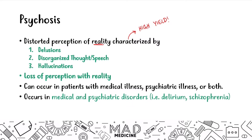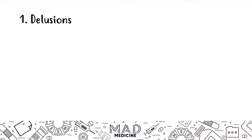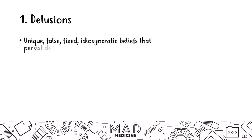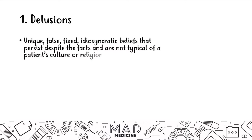That's basically all the background stuff you need to know about psychosis. In this video, we're going to be discussing these three manifestations of psychosis. So let's start off with the very first manifestation, which is going to be delusions. Delusions are false, unique beliefs that patients have that they believe are fact, that they believe are real. You have to understand that these delusions are not going to be typical of a patient's culture or their religion — it's not something that's normal for their culture. These are things that they have come up with.